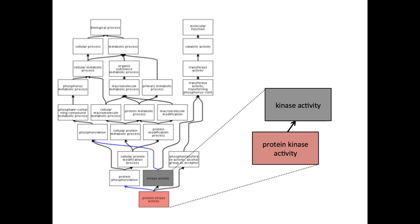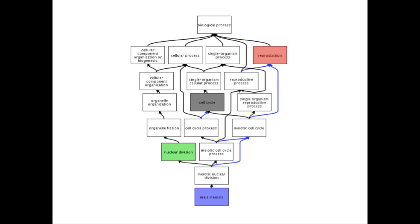The GO is arranged in a hierarchical structure, with more specific GO terms nested under higher-level parent terms. For example, protein kinase activity is a child of kinase activity. More complex relationships exist within the GO, and terms can be linked to multiple branches. For example, male meiosis is related to the more general terms reproduction, cell cycle, and nuclear division.